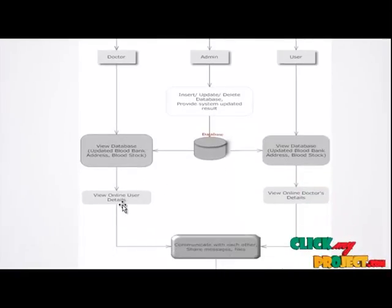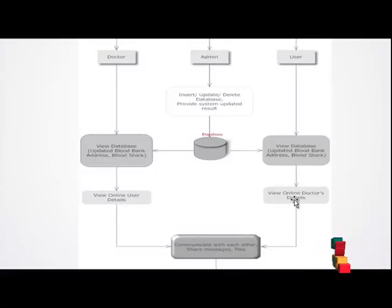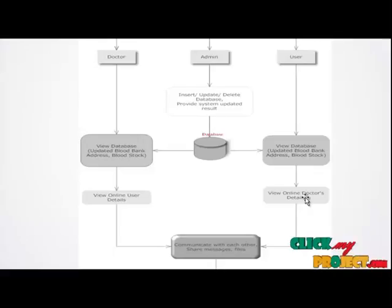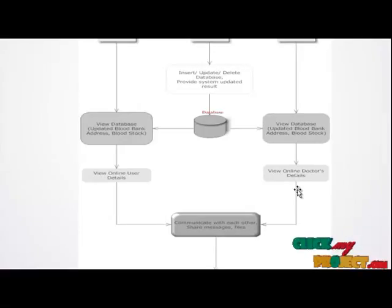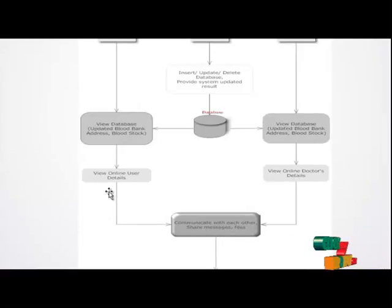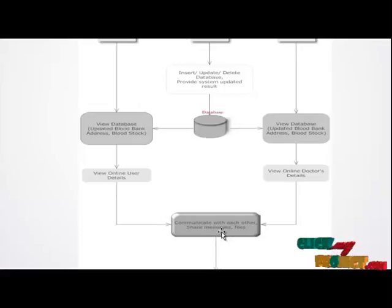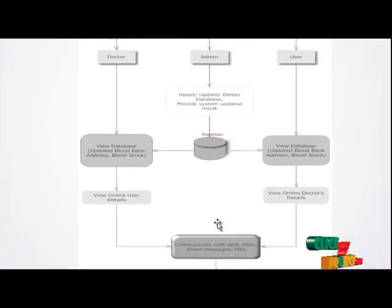The doctor and users can both view the centralized database. The doctor can view the online user details, and the user can view the online doctor's details. The user and doctor can communicate with each other. The user can send their health report to the doctor, and the doctor can send their suggestions about the health report. That's all about the architecture.